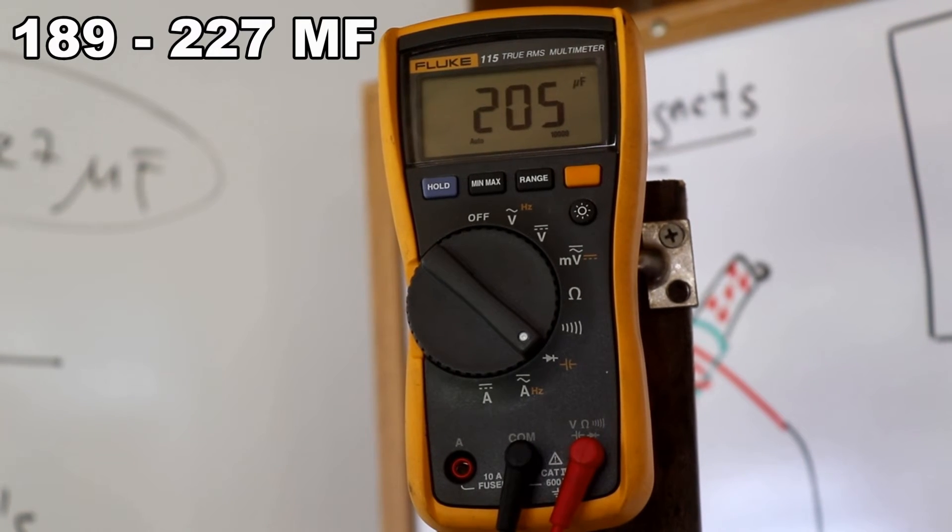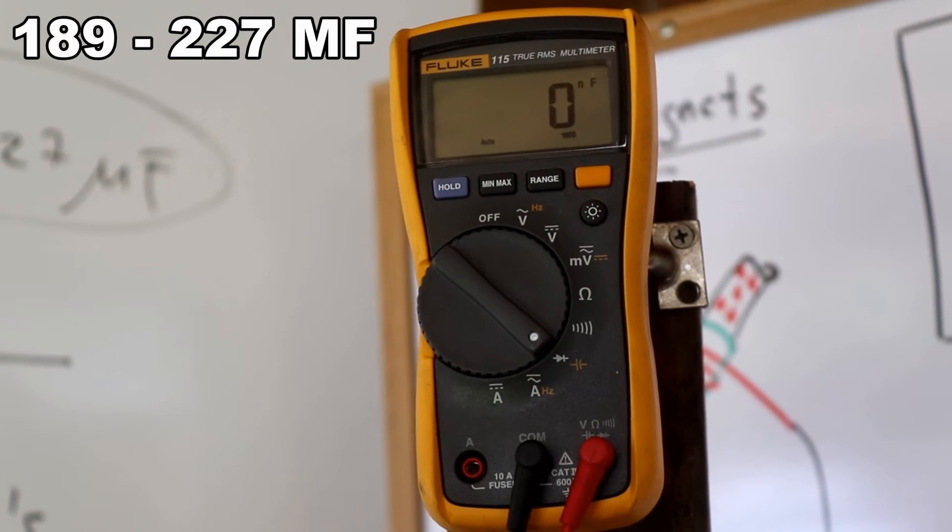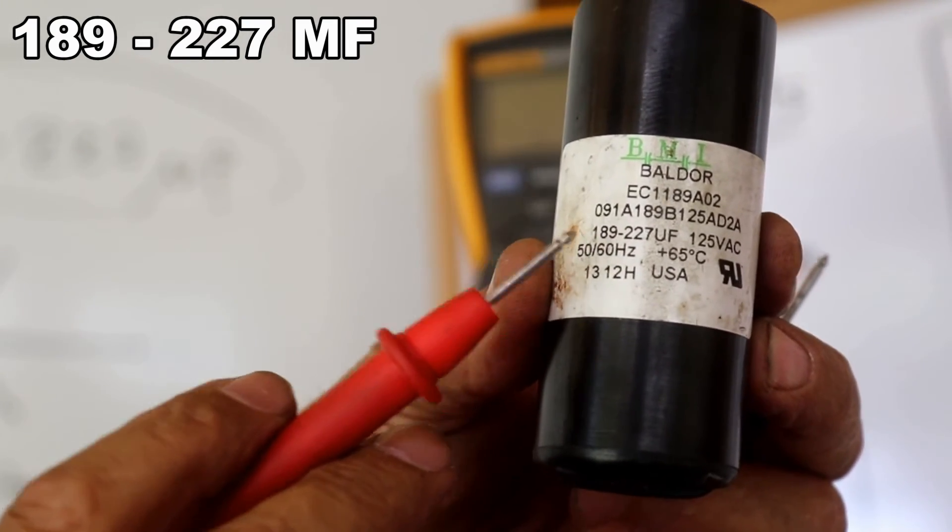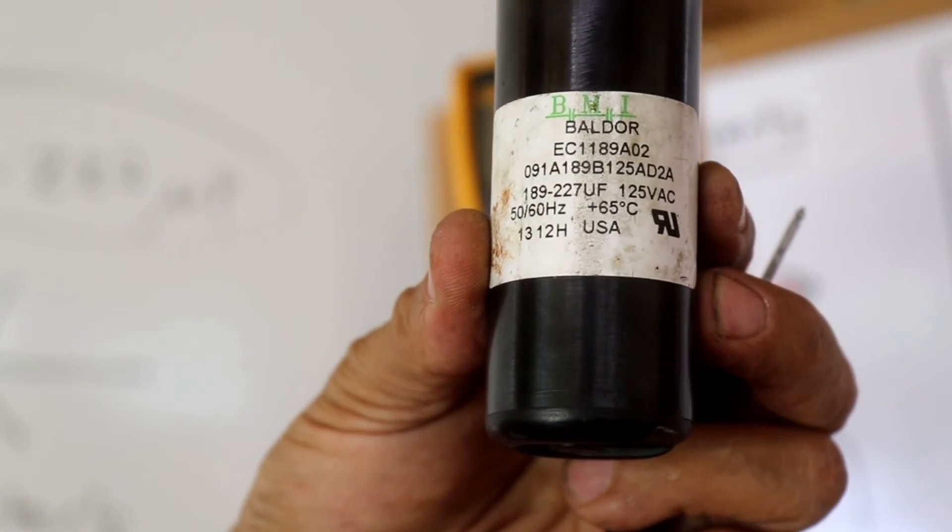If you remember this is 205, the capacity is in between 189 and 227, and I have 205. This capacitor is in good condition.